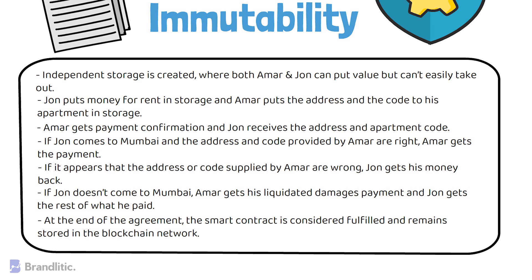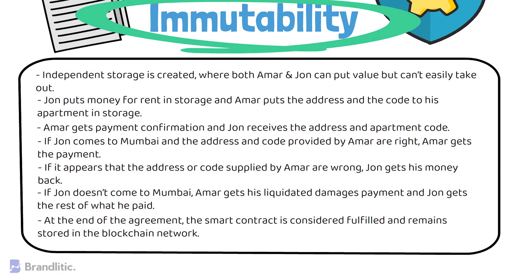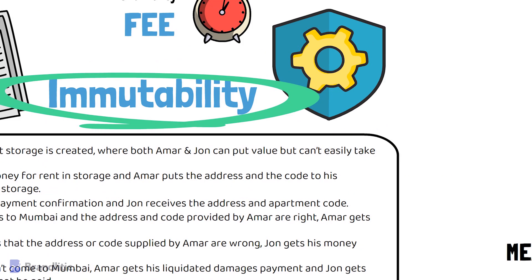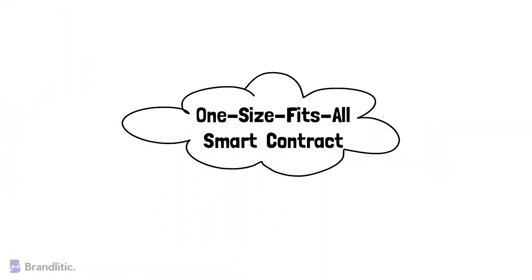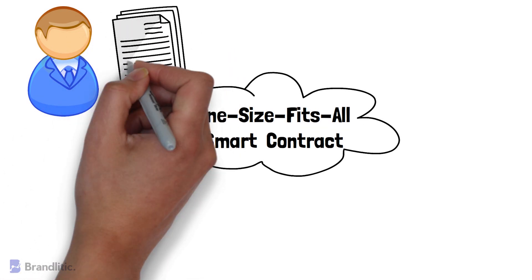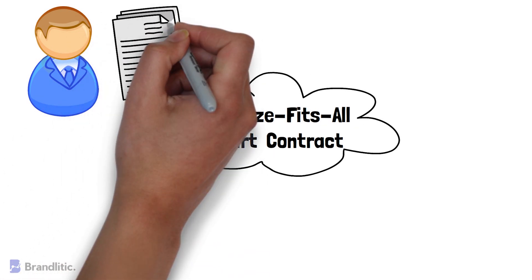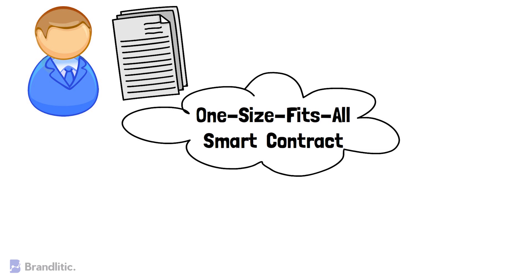The overall contract fulfillment is guaranteed by the blockchain technology itself, as the complete copy of the blockchain is publicly stored by all network participants and the smart contract remains immutable. Next, let's talk about the logic of a one-size-fits-all smart contract. Once Amar generates a smart contract that automatically and transparently works for him when renting out his apartment to John, he might think about creating a universal agreement for all future renters so he doesn't need to create a new smart contract for each new guest.